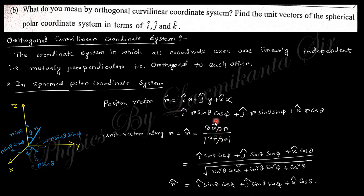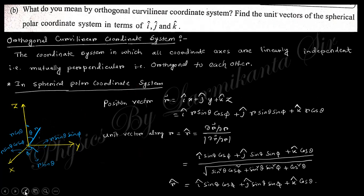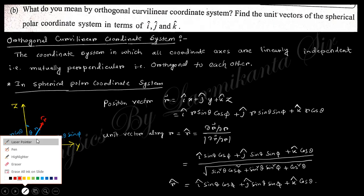The unit vector r-cap equals (∂r-vector/∂r) divided by its modulus. Taking the partial derivative of r-vector with respect to r gives i-cap sinθ cosφ + j-cap sinθ sinφ + k-cap cosθ. Dividing by the modulus, the sin²θ terms combine to give 1, and so r-cap is obtained. r-cap is along the radial direction, θ-cap along the polar direction, and φ-cap along the azimuthal direction.